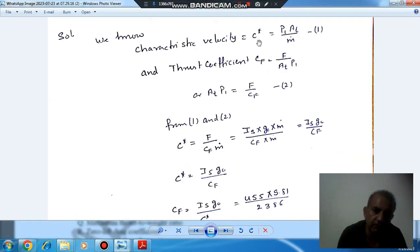So characteristic velocity, we know that C star is equal to P1 AT by M dot. P1 is combustion chamber pressure, AT is area of throat, and M dot is mass flow rate of gas.